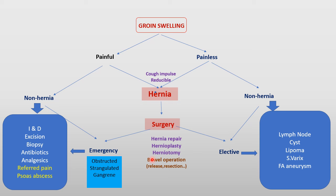The non-hernia painful conditions include referred pain, psoas abscess, lymphadenitis, and infected cysts — all are painful swellings treated with incision and drainage, excision, biopsy, antibiotics, and analgesics. The non-hernia, non-urgent cases include lymphadenopathy, cysts, lipoma, saphena varix, and aneurysm of the femoral artery. This is a simple algorithm for the management of a patient with groin hernias.